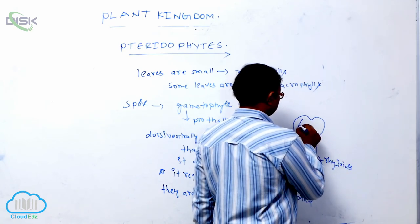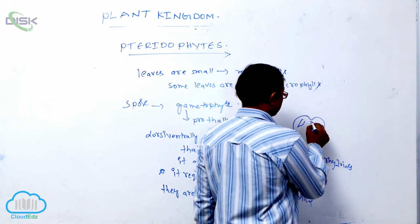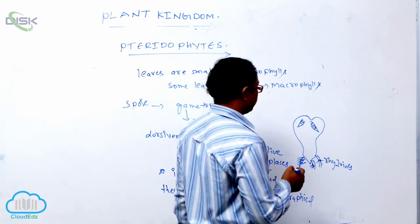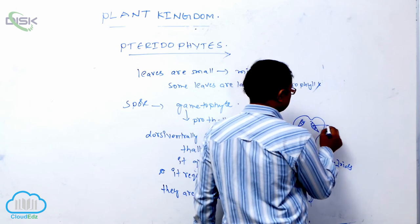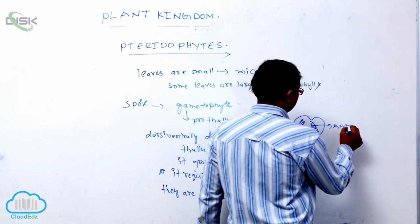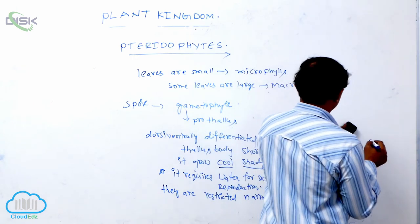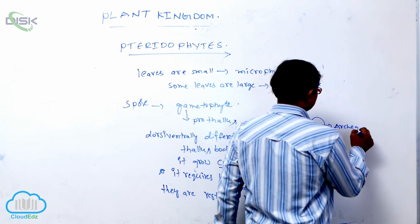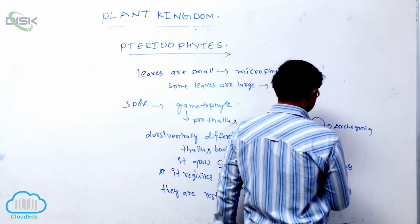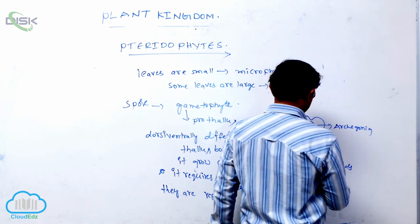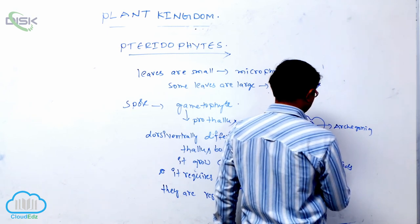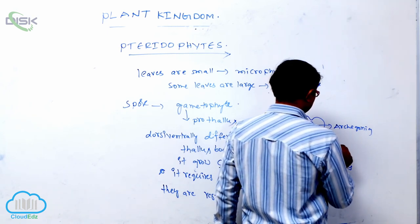In homosporous conditions, they have both antheridia and archegonia present on the same gametophyte. The antheridia are the male reproductive structures and the archegonia are the female reproductive structures.